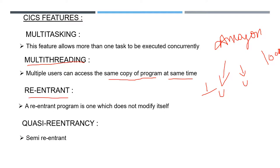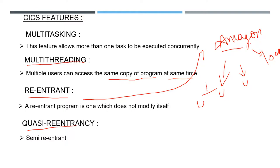Re-entrant means it is not a self-modifying program. Amazon also has this property. Even if one lakh users are using it concurrently, it appears as Amazon only — it won't change into Facebook or any other app. The program copy doesn't change; it is a re-entrant program.